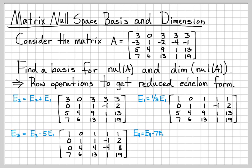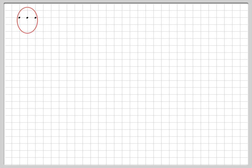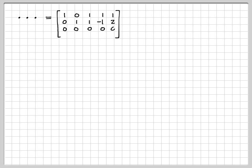Next, we replace row 4 with row 4 minus 7 times row 1 to get a 0 there, while rows 1, 2, and 3 remain unchanged. Continuing in this fashion — there are a few more straightforward steps covered in other videos — you will end up with a matrix in row-reduced echelon form, which we'll call matrix B.